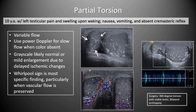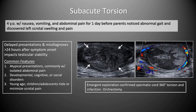Subacute torsion refers to delayed presentation after 24 hours of symptom onset, which impacts testicular viability. A 4-year-old with nausea, vomiting, and abdominal pain had an abnormal gait and left scrotal swelling discovered by parents. Common features include atypical presentations — often isolated abdominal pain — and young patients who hide or minimize scrotal pain. This patient had emergent exploration confirming 360-degree torsion with testicular infarction and underwent orchiectomy, as seen on the markedly heterogeneous testis with absent color Doppler flow.